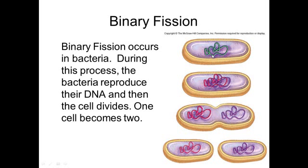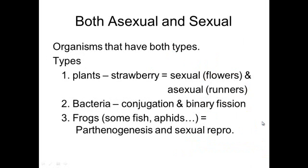Binary fission is when one bacteria cell replicates its DNA and divides into two. Some organisms can do both sexual and asexual reproduction. Strawberry plants can do runners as vegetative propagation, but they can also produce flowers, which is sexual reproduction. Bacteria can go through binary fission, which is asexual, but they can also exchange genetic material through conjugation, which is sexual.